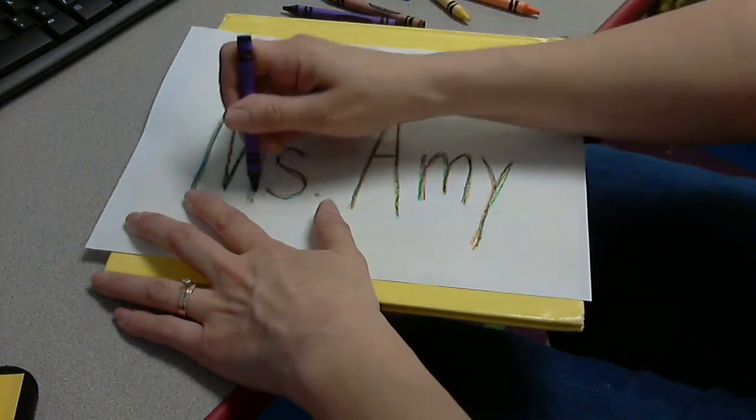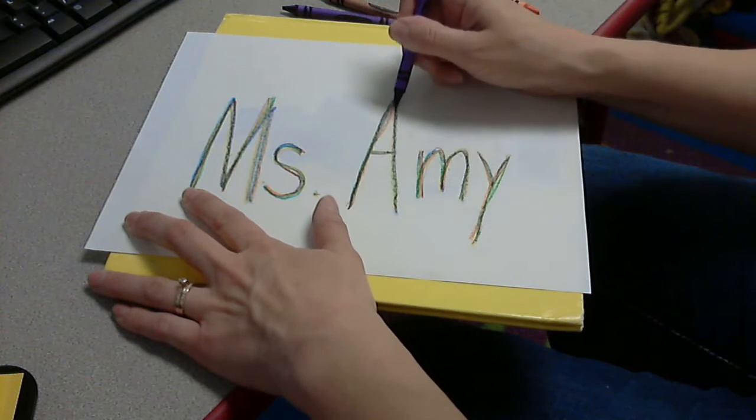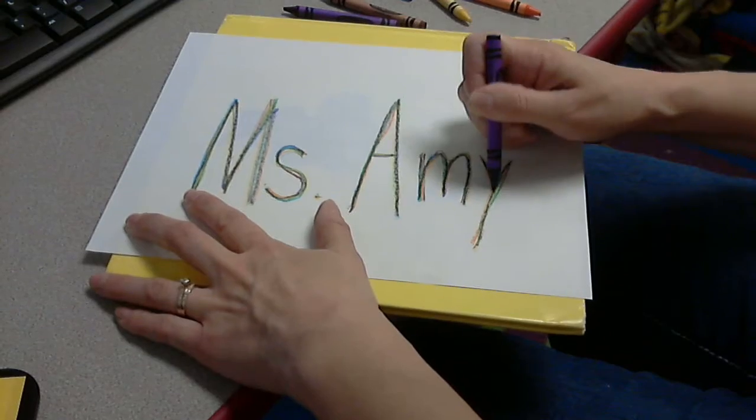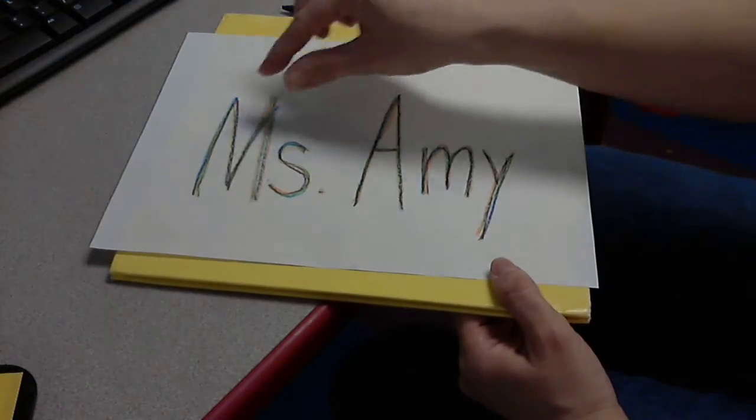So as you can see, all of the letters have been written on with each color. That's a total of six colors. So that means they practiced their name six times in a row.